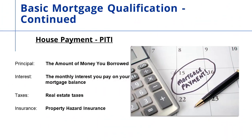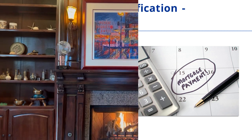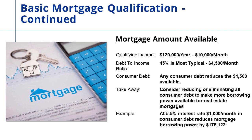Your house payment itself is broken down into PITI — principal, interest, taxes, and insurance. Principal is paying back the amount owed; interest is what you pay for borrowing; taxes are your real estate taxes; and insurance is your property hazard insurance. The key takeaway is: consider reducing or eliminating consumer debt to make more borrowing power available for real estate. At a 5.5% interest rate, $1,000 a month in consumer debt reduces your mortgage borrowing power by over $176,000.